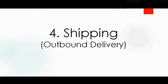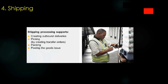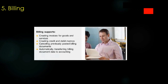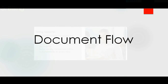Once procurement is finished and the goods are available, we start the shipping process, also known as outbound delivery in SAP. In this step we create the delivery in the SAP system, do the picking and packing, and post the goods — meaning the truck leaves our company premises. Finally, in billing, we send the invoice to the customer and they pay the dues for the sales order.